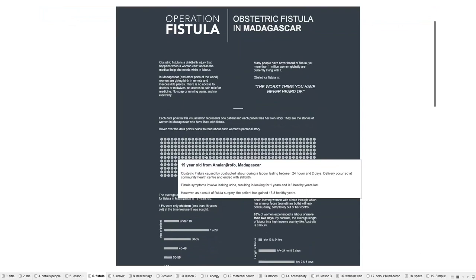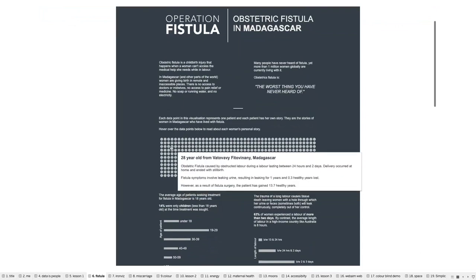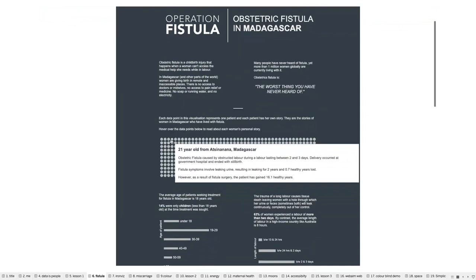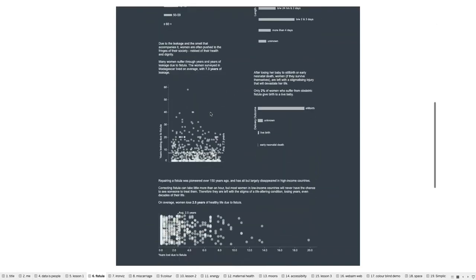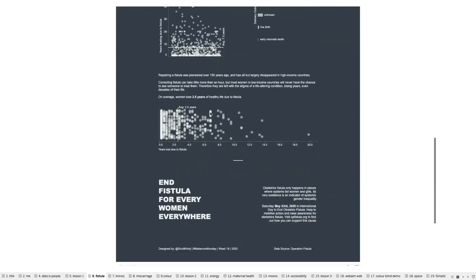We have data here used to create the charts and numbers, but behind these numbers there are real women who are affected by fistula and are living the aftermath of their injury. In this viz I wanted the audience to know each and every single one of these women. Each dot represents someone who has been affected by fistula — how many healthy years they've gained or lost as a result of surgery. We can see each woman's personal story. This was one of the first vizzes that made me think about the people behind the numbers and the story I wanted to tell using this data.